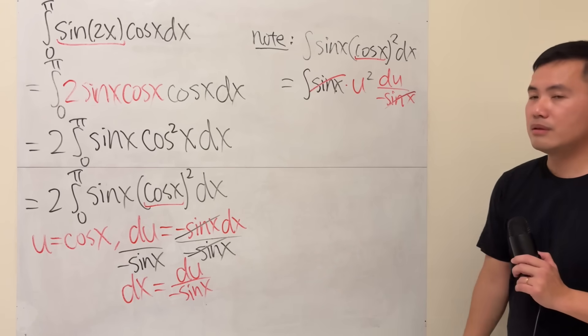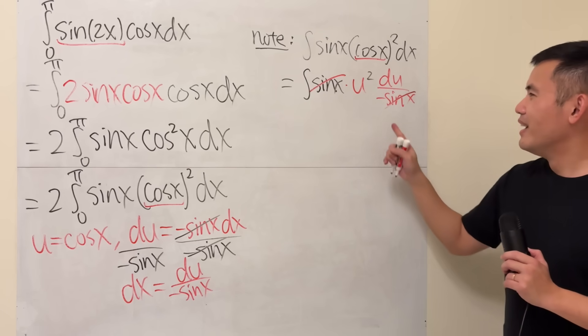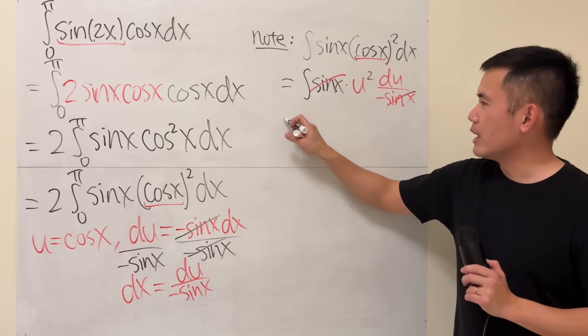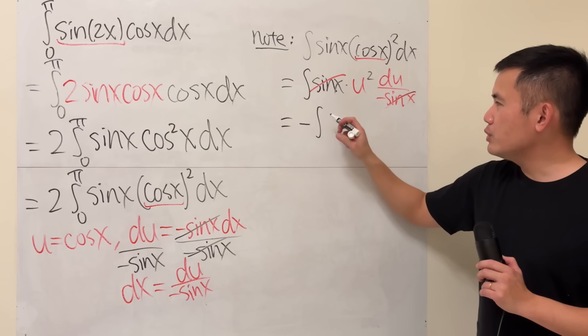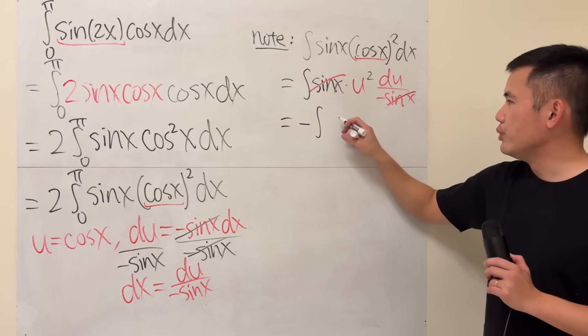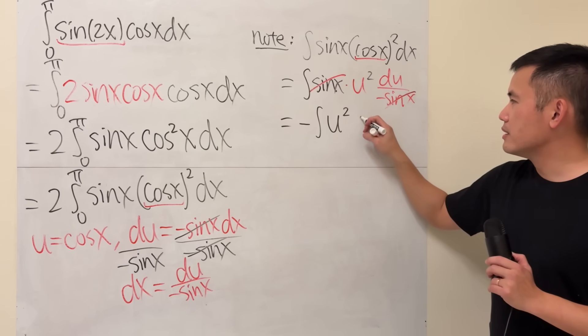Alright, and then we have a negative. We can bring that to the outside. You have a negative right here, and we just have to focus on integrating u squared du.